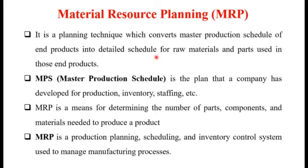That means how many parts are required, at what quantities, and at what time. The Master Production Schedule, MPS, is the plan that a company has developed for their production, inventory, and stocking. MRP is a means for determining the number of parts, components, and materials needed to produce a component. It is also a Production Planning, Scheduling, and Inventory Control System.